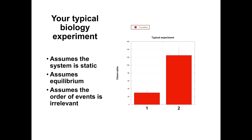I'll describe a typical biology experiment that most of you are used to: using two conditions — an experimental condition where you perform a perturbation, and a control condition. You sample the experimental condition multiple times, derive error bars, sample the control, determine statistical properties, and compare the two to see if there's a difference. But this is a dangerous approach for dynamic systems, because it assumes the system is static and at equilibrium — that repeated samples are identical.